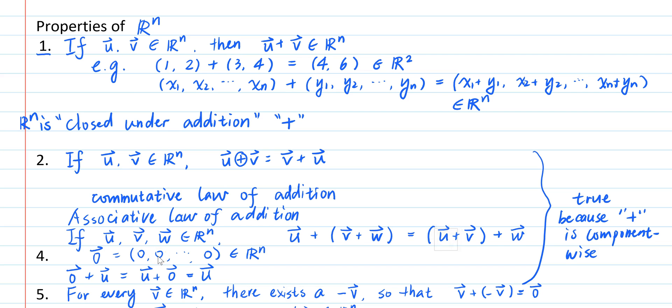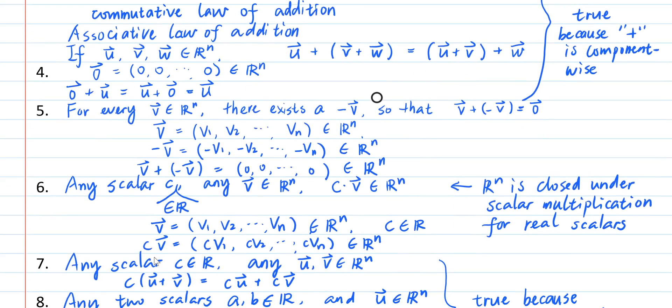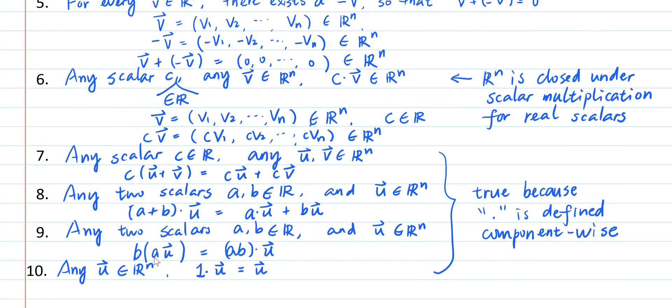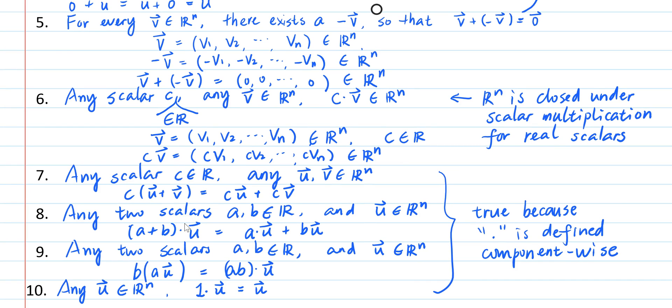So here are the 10 properties of R^n that we're going to use to define a vector space and to extend the concept of vectors to a more abstract level by thinking about what really makes vectors, vectors. So we will talk about the concepts and examples of general vector spaces in the following video.